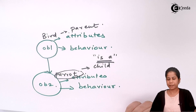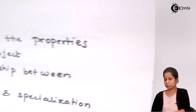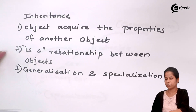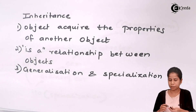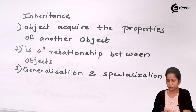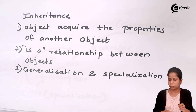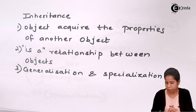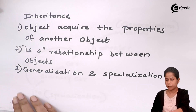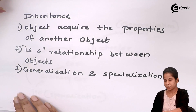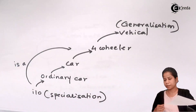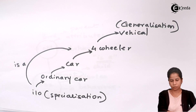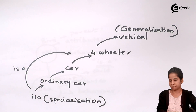So we can say "a Parrot is a Bird" — the relationship between these two objects is an "is-a" relationship. So this kind of inheritance shows an is-a relationship between two objects.